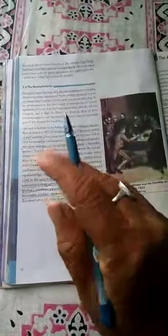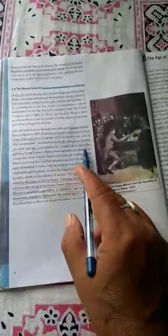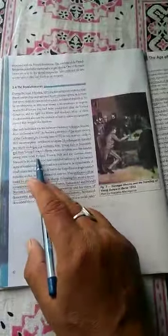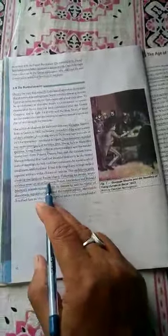He subsequently founded two more underground societies. First, Young Italy in Marseille, and then Young Europe in Bern. His view was that unification alone could be the basis of Italian liberty.